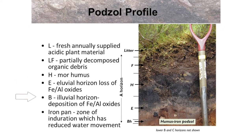Under the A horizon is a B horizon — an illuvial horizon with deposits of iron and aluminium oxide, as well as organic material. Many Podzols have zones of induration such as an iron pan: a solid layer of soil that is difficult to penetrate, impeding the drainage of the soil.